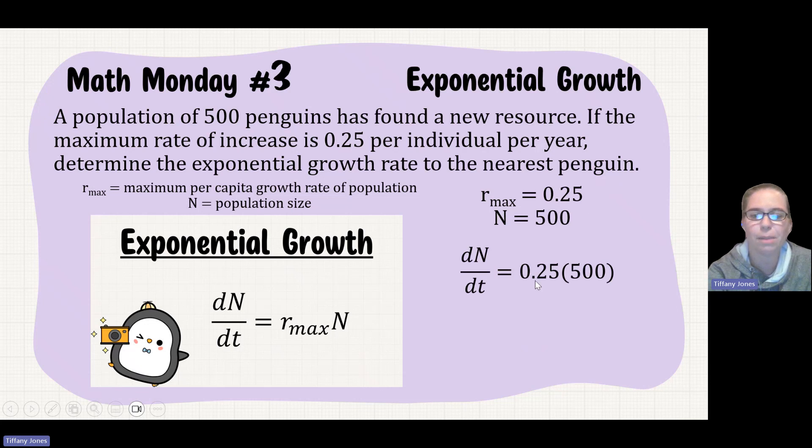If I substitute this in, I put r_max, 0.25, times N, which is 500, which equals 125. This means that in the first year, we're going to see it grow by 125 penguins.